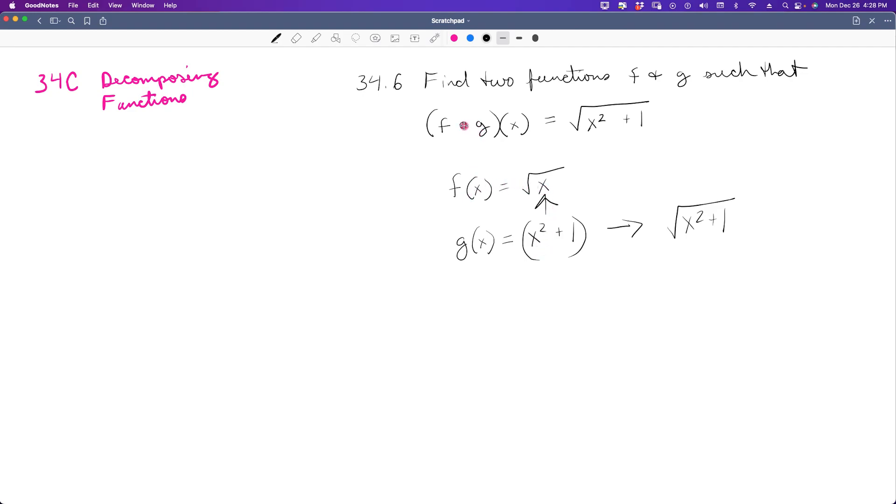Because g is being substituted into the f. So that is the way that you would solve this problem and that is the way you would write your answer. You would say f of x is equal to the square root of x, and then g of x is what is substituted in that equation there.